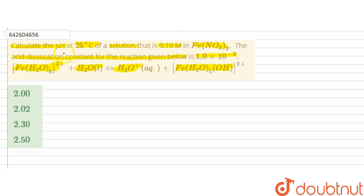So, in this question, we have to calculate the pH of a solution that is containing 0.1 molar of ferric nitrate Fe(NO3)3 and the dissociation constant of the reaction is also given, that is Ka, so we have to calculate the pH. So, first of all the reaction that is Fe(H2O)6 3+ plus H2O liquid, this is giving hydronium ion aqueous plus Fe(H2O)5(OH) 2+.